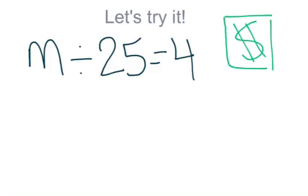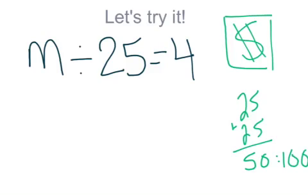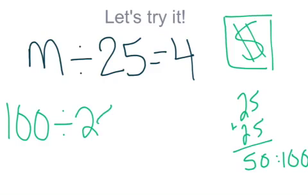Alright, well I know that if I have 25 four times, that's going to get me to, let's see, okay, so 25 plus 25 is going to get me to 50, and if I doubled that, that would get me to 100. So that makes me think that 100 divided by 25 would get me 4.